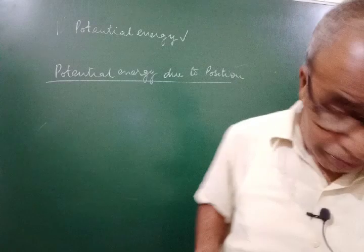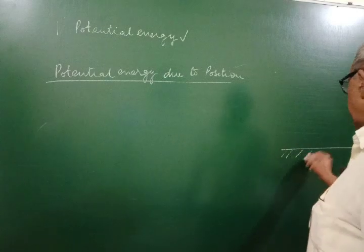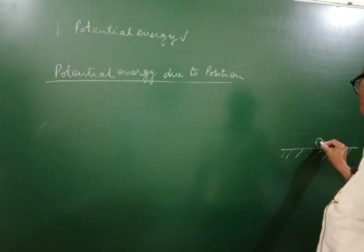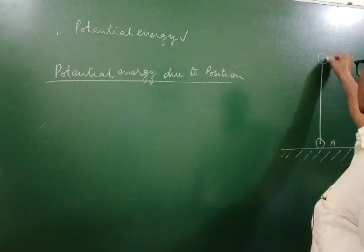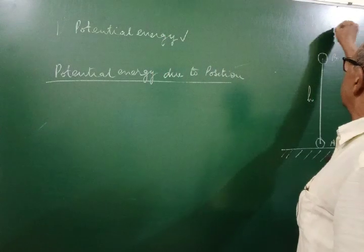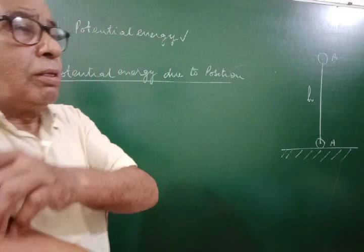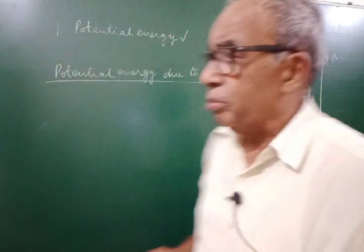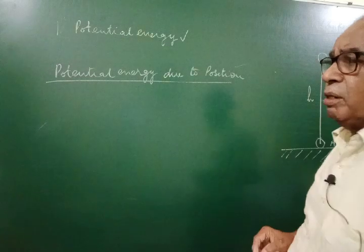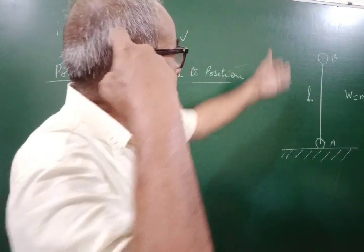We are living on the Earth's surface, and Earth attracts everybody to its center. So when you lift a body of certain mass, you have to do work against the gravitational force. Suppose a body is at point A and is carried to height H to point B. Height H is very much less than the radius of Earth, so we assume weight W = mg does not change.